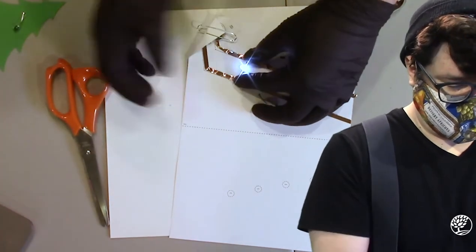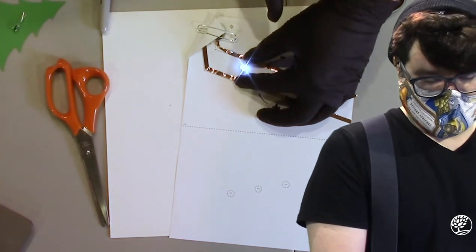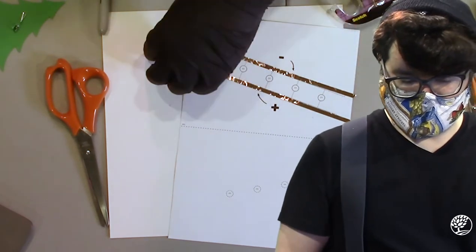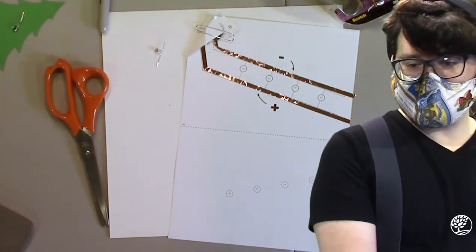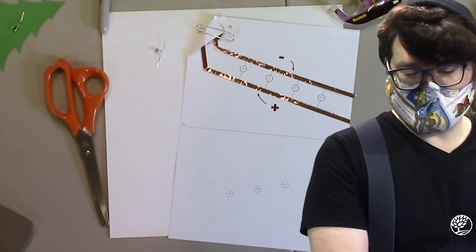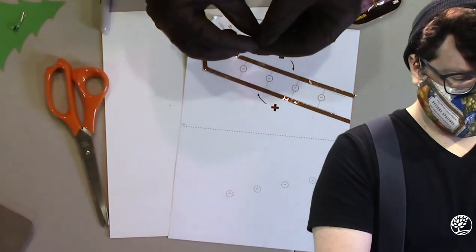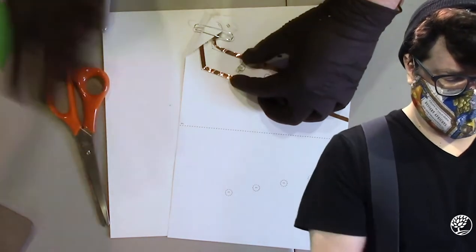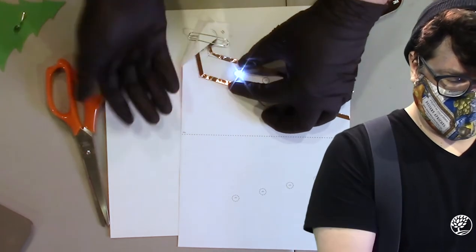So now you're going to take your LED and hold it across the two traces you've just made with the longer of the two leads on the positive trace and the shorter of the two on the negative trace. Hold it to the trace with your fingers. Don't worry, the amount of electricity that the battery can put out will not harm you. The LED should light up.